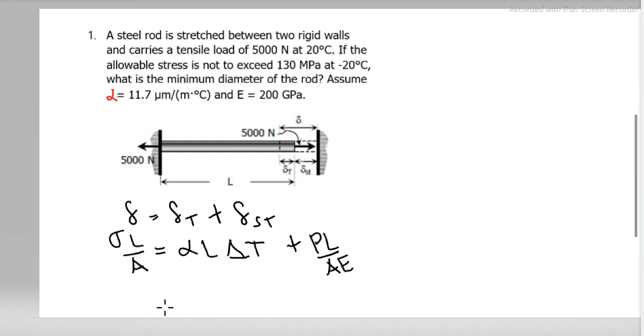And then simplify this in terms of stress. Because this is PL over AE, the stress is equal to... cancel the length.